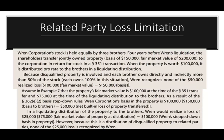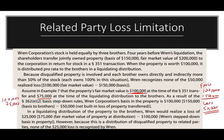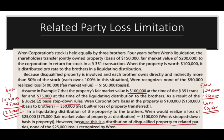Let's change the scenario: assume the fair market value was $100,000 at the time of the Section 351 transaction and $75,000 when distributed. At contribution, the FMV was $100,000 and basis was $150,000 — so there was a built-in loss. Due to basis step-down rules, the basis becomes $100,000. When distributed at $75,000, we have a realized loss of $25,000. However, because this is a distribution of disqualified property to related parties, none of the $25,000 loss is recognized. In both scenarios, whether built-in gain or built-in loss at contribution, it's disqualified property and the loss is not recognized.